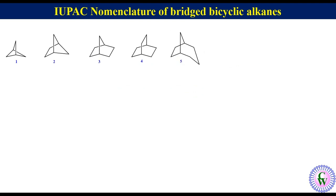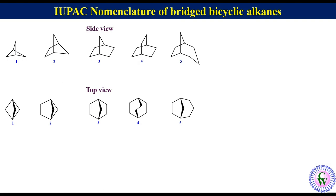These are the five simplest unsaturated bridged bicyclic alkanes. This view is the side view. If we view these molecules from the top then they will look like this. We can draw a general structure for these molecules in side view, and the top view for the same molecule will look like this.